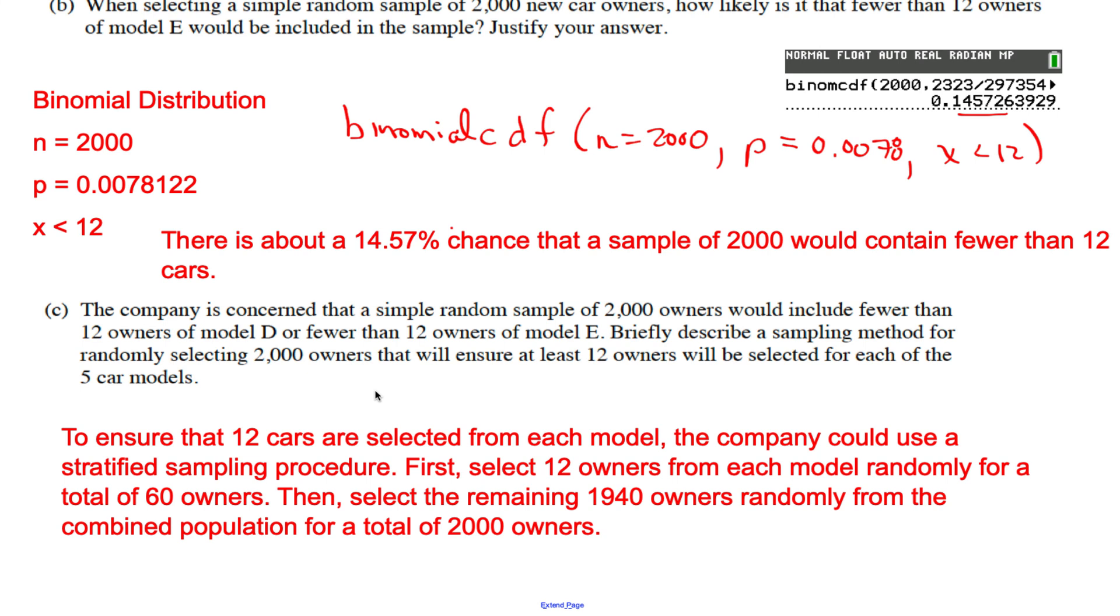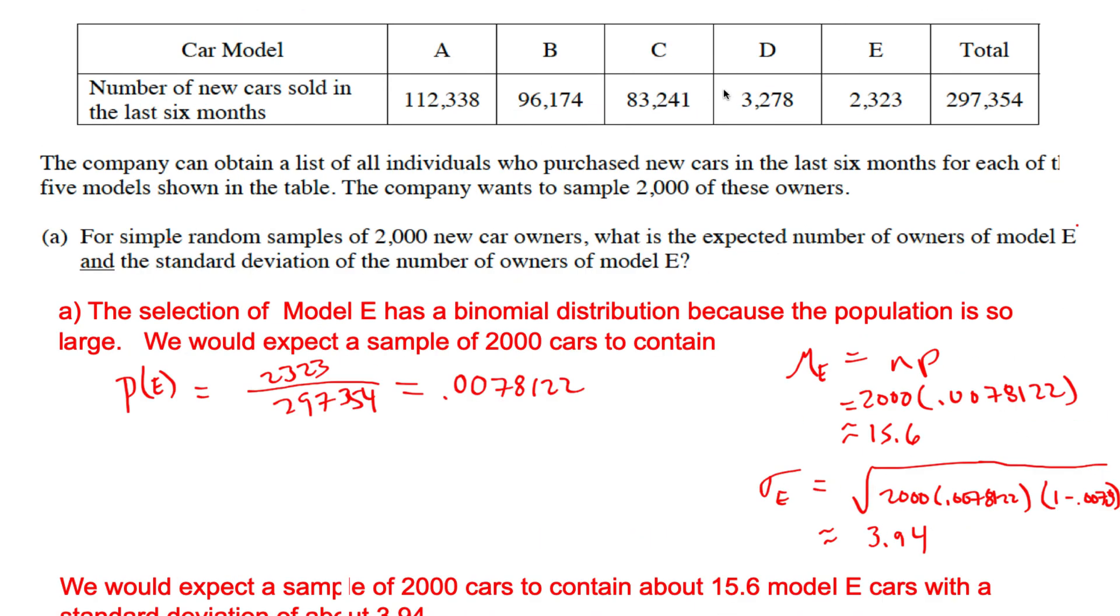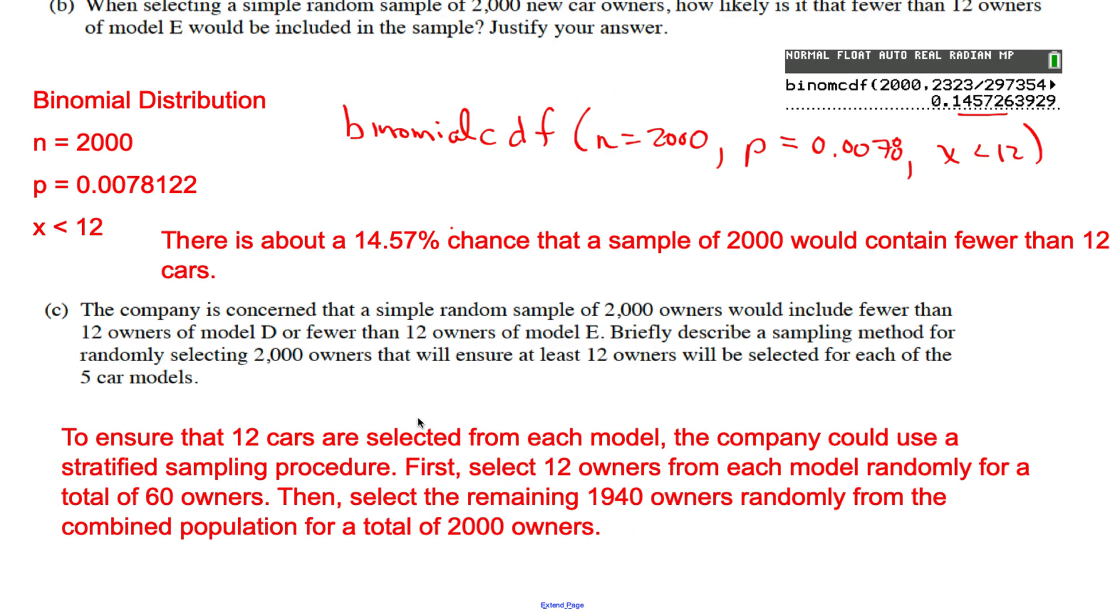First, select 12 owners from each model randomly for a total of 60 owners - 60 because we have five models, so five times 12. Then select the remaining 1,940 owners randomly from the combined population for a total of 2,000 owners. That was my idea.